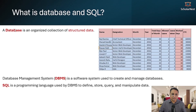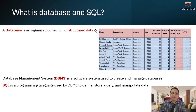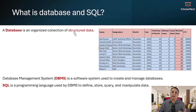The first term is database, and that's the first question we want to understand: what is a database? A database is an organized collection of structured data. There are two terms here — structured data and database. So first let's try to understand what is structured data. Structured data is any data which can be represented in the form of rows and columns.